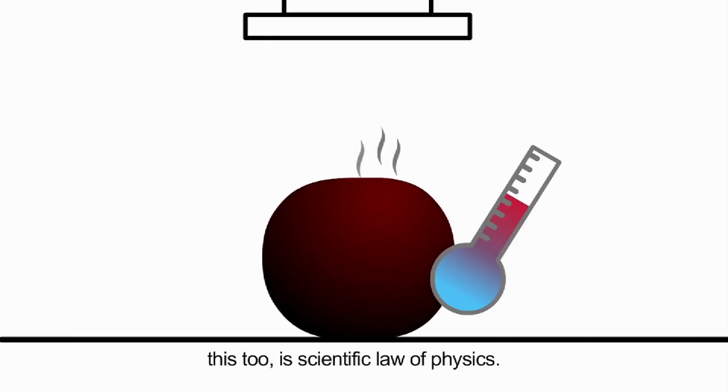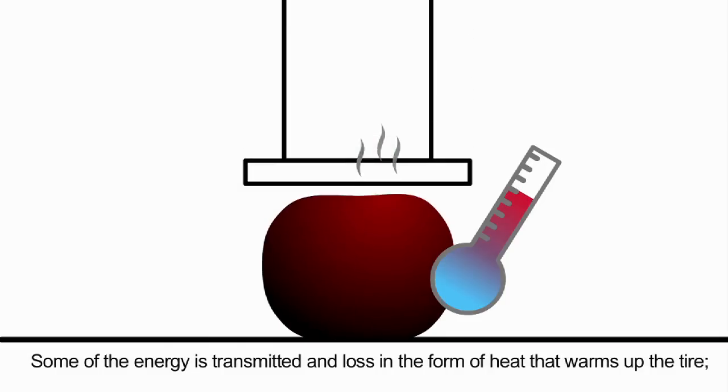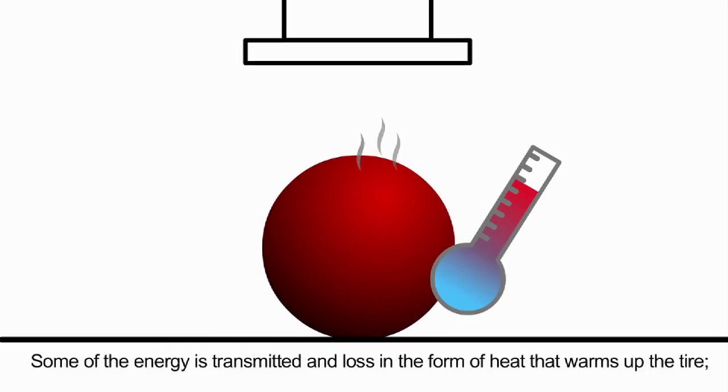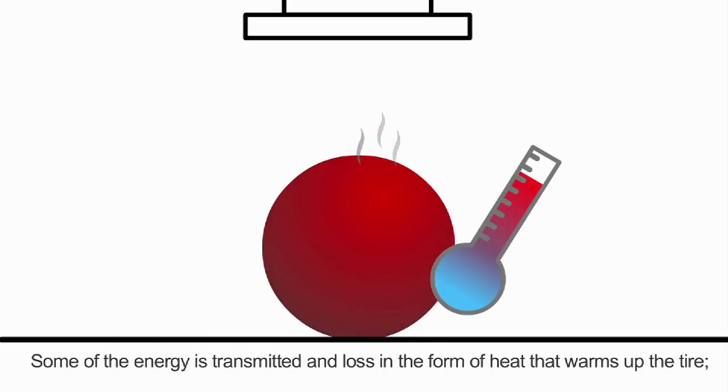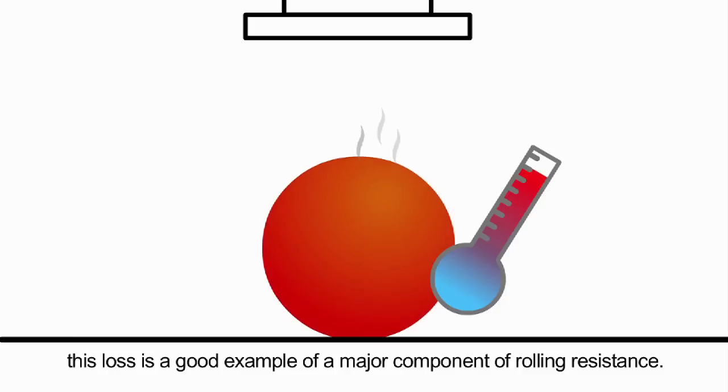This, too, is scientific law of physics. Some of the energy is transmitted and lost in the form of heat that warms up the tire. This loss is a good example of a major component of rolling resistance.